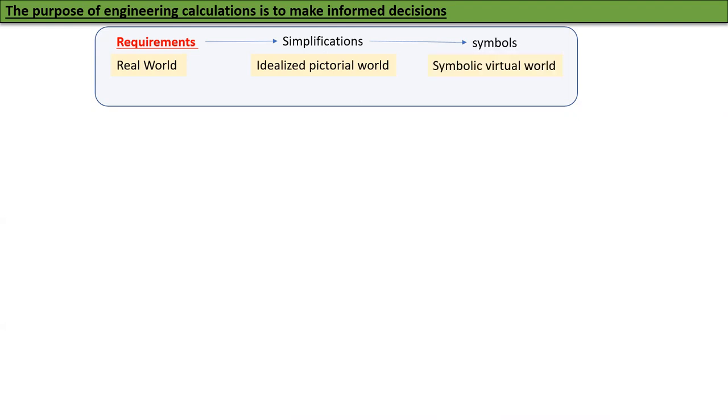You have to convert it into simplifications to create an idealized pictorial world, which is what we call the interface. Then we convert that into symbols, the symbolic or virtual world. We do all our deductions in the symbolic world, interpret and figure out what the deductions mean in the interface world, and then use that to make decisions in the real world. So you can see how we have to go between these worlds.